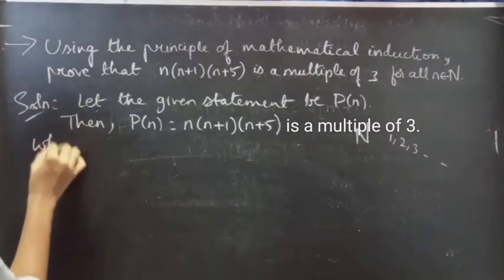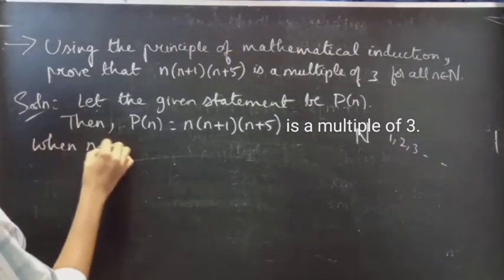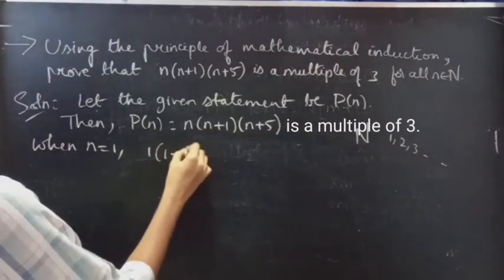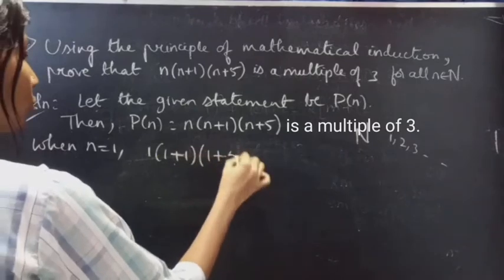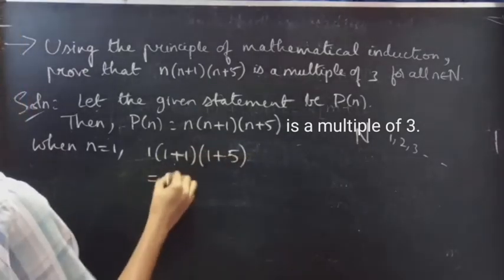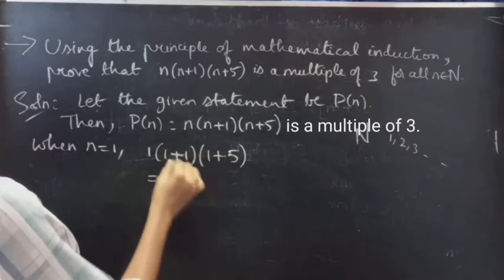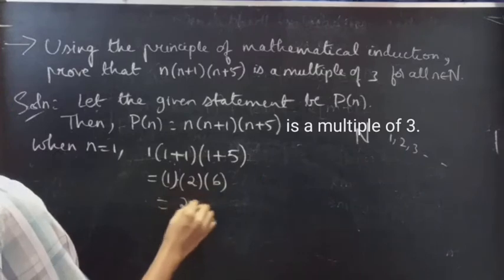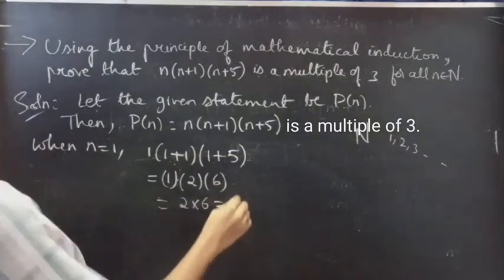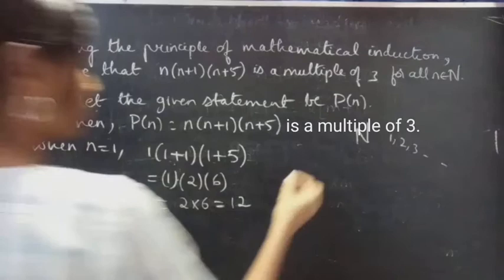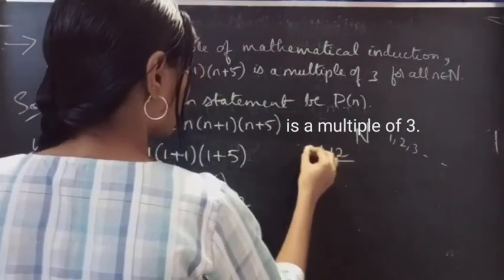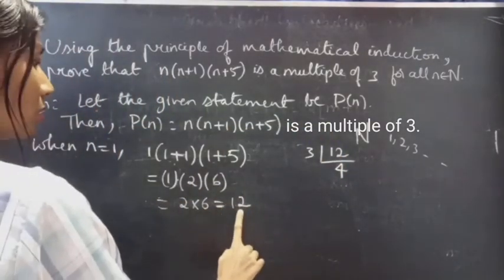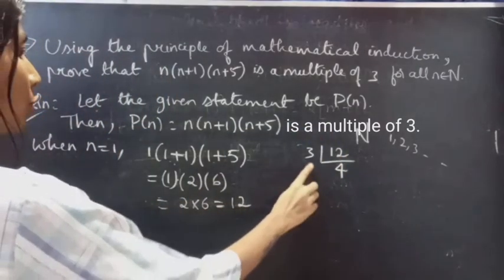When n=1, put n=1 in the given statement: 1×(1+1)×(1+5) = 1×2×6 = 12. And 3×4=12. So 12 is a multiple of 3.